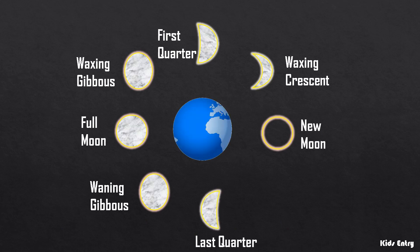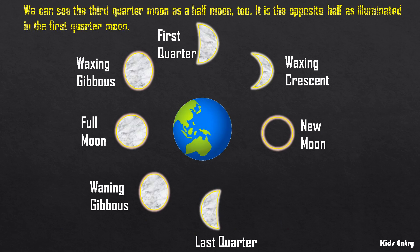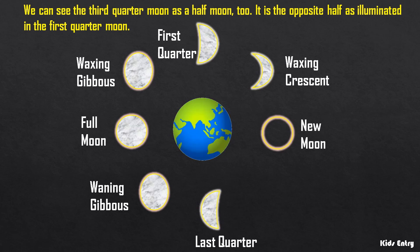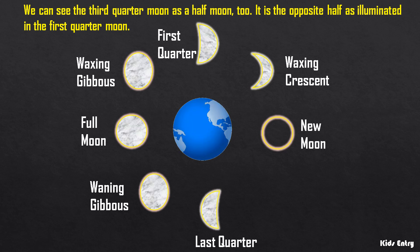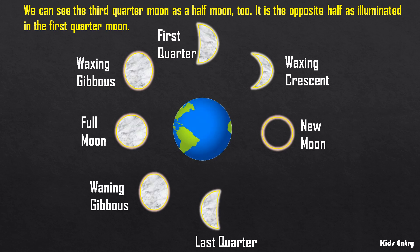Last quarter. We can see the third quarter moon as a half moon too. It is the opposite half as illuminated in the first quarter moon.